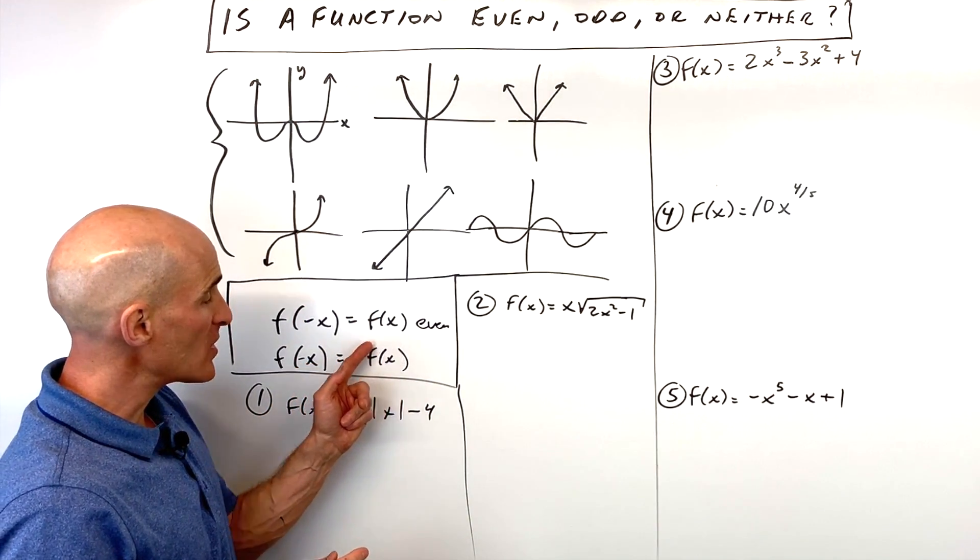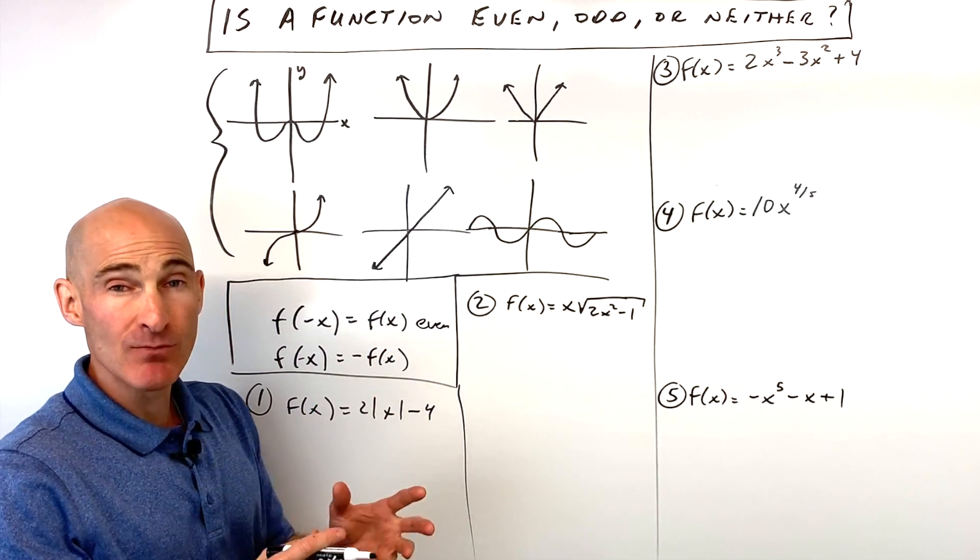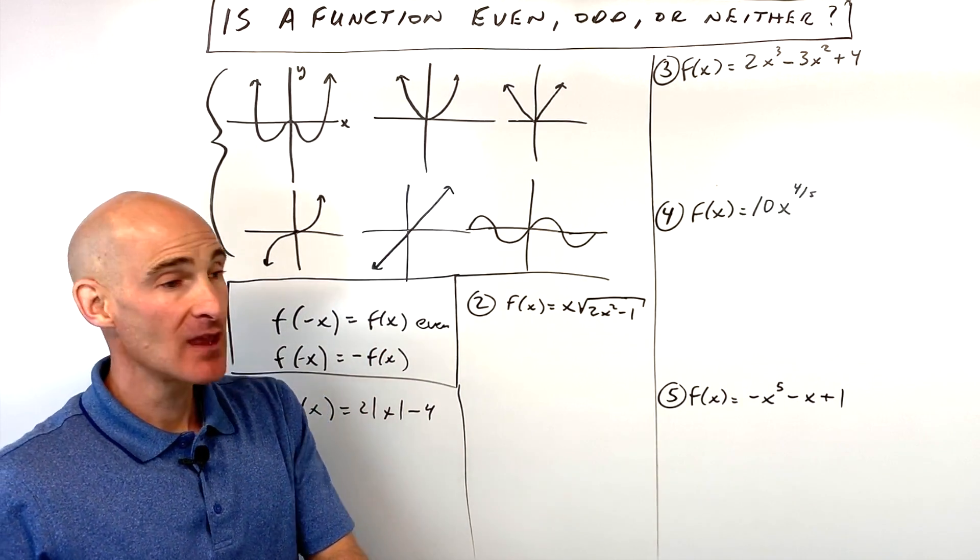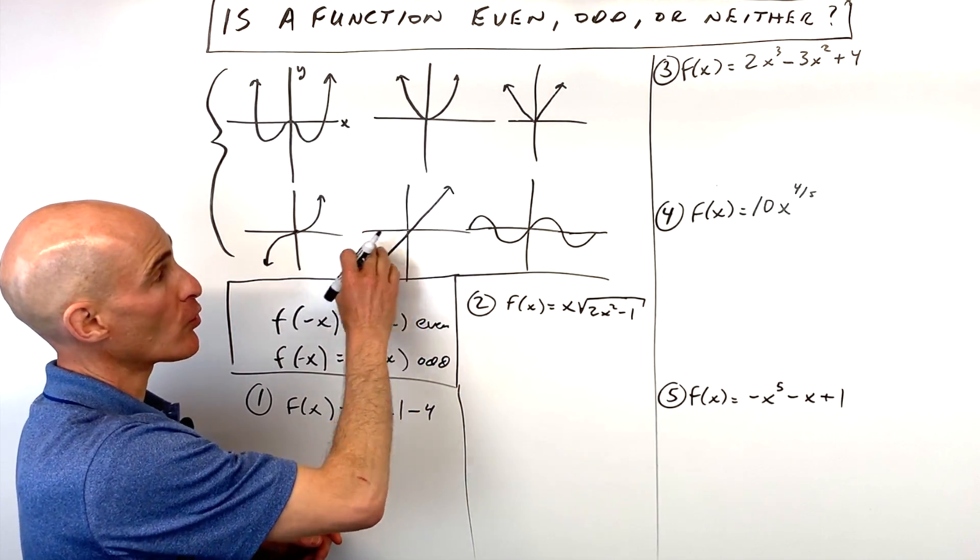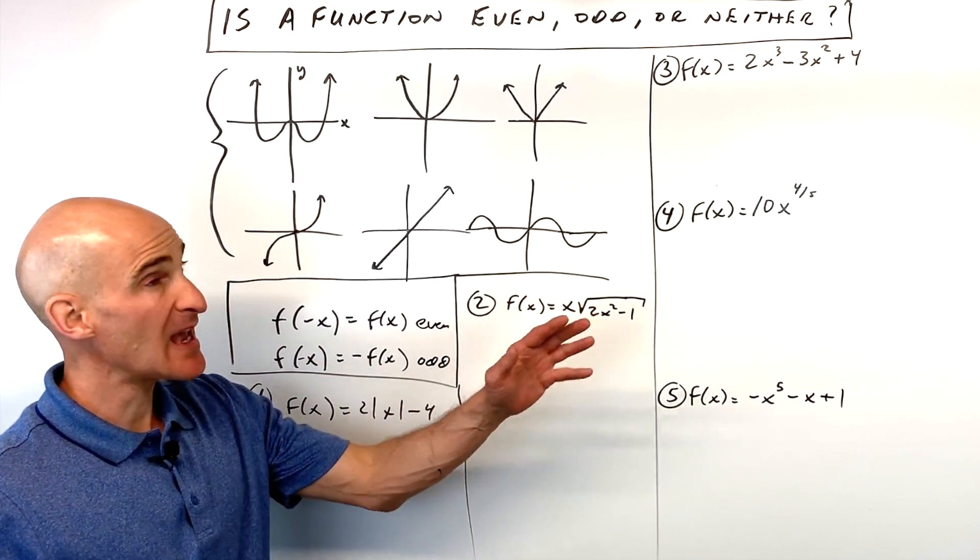If you put negative x in and you get the original function back, but it's multiplied by negative 1, then that means that it's an odd function, which means it's a rotation about the origin, like these bottom three ones here. So let's go through some examples.